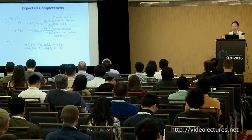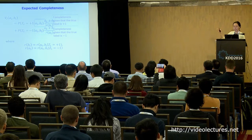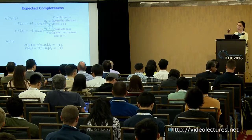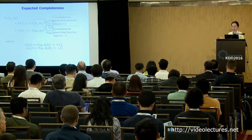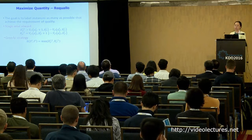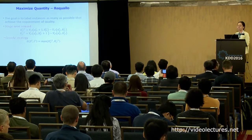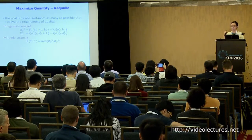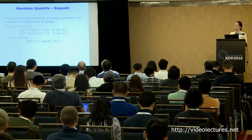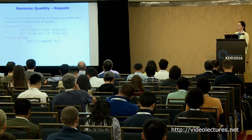With this, you compute expected completeness: the first part is completeness given the true label is positive, the second part is completeness given the true label is negative. Using this completeness measure, the framework maximizes quantity — labeling as many instances as possible that achieve the required quality. The stage-wise reward changes from the previous framework: instead of accuracy improvement, it becomes the expected completeness of the next stage minus the expected completeness of the current stage. The framework also uses a greedy strategy picking the instance with the biggest reward.